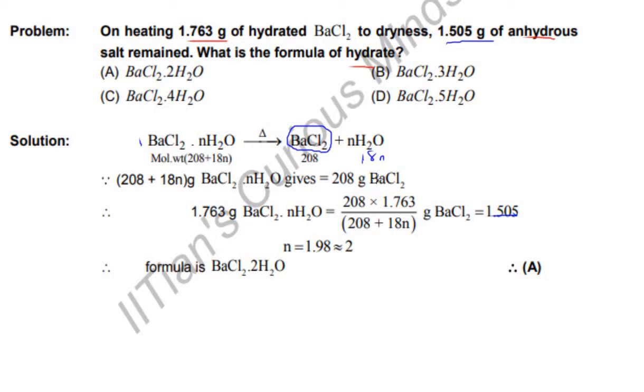So now we get two equations. Let me write in the proper way. 208 plus 18n, this gives how much? 208.